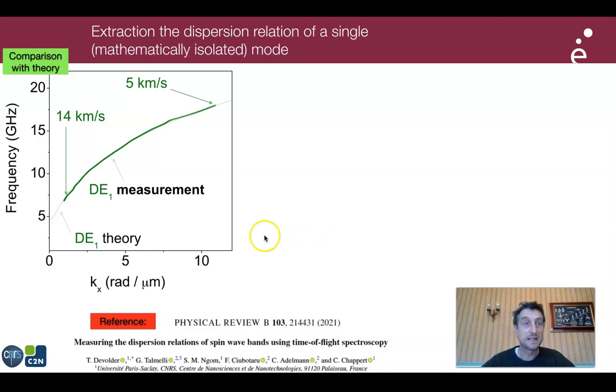This is done, for instance, in this case for a 5 micron conduit. Here we show the dispersion relation that is obtained, deduced from the experiment as the bold curve, and it matches very well, which can be expected, with a simple Damon-Eshbach theory.